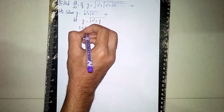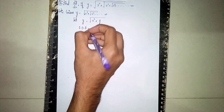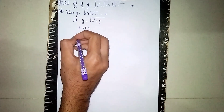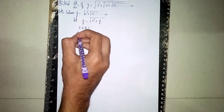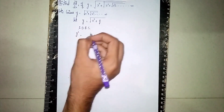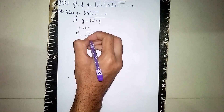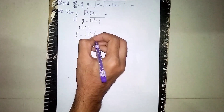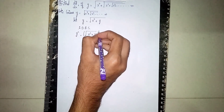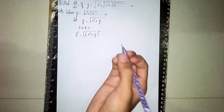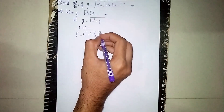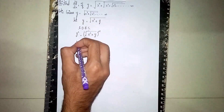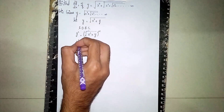Now squaring on both sides: y² = (√(x³ + y))². The square and square root cancel each other out.